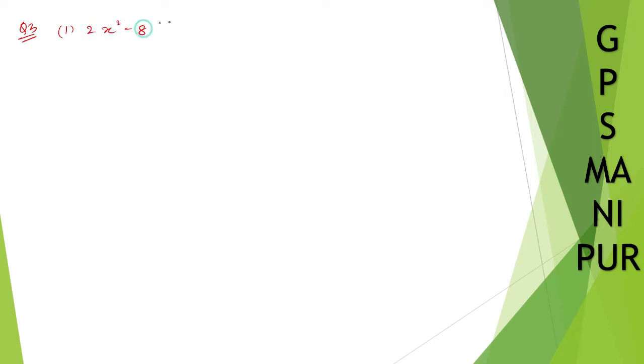Now we are doing Exercise 2.4, question number 3. Question number 3 says: find the HCF and the LCM of the following polynomials. Roman numeral 1: 2x squared minus 8, and 5x squared minus 20x plus 20.